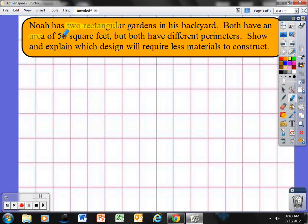Both have an area of 56 square feet, so the area is the same for both. Keyword here is different - different perimeters. So you have same area but different perimeters. Show and explain - and means do both. Which design require less materials to construct, OK.